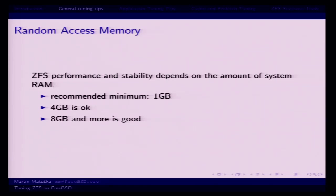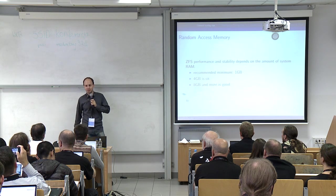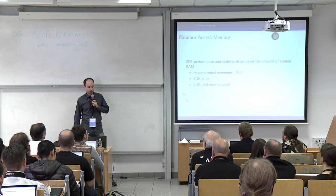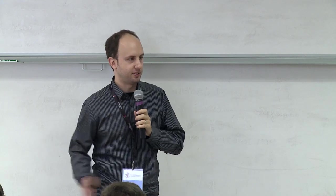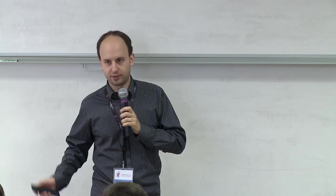ZFS is a RAM eater — caches and other parts of the file system need random access memory. In FreeBSD the recommended minimum is one gigabyte, but that's really for a very small home server doing nothing useful. For serious work you need at least four gigabytes; I recommend eight or more as total memory. We'll look later at how much of this memory is used for the ZFS caches.